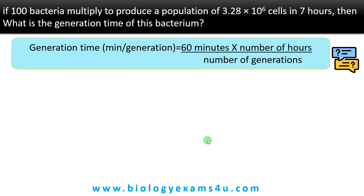The equation for calculating generation time — minutes per generation — is equal to 60 minutes times number of hours, divided by number of generations.